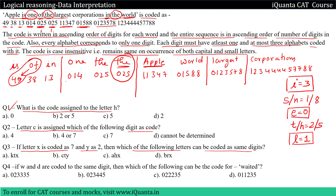Now if I compare 'the' and 'apple', between them I have only one letter common, which is E. And E we already know is zero. So when can we have zero common between 'the' and 'apple'? It is possible only when I assign 'apple' as 01588. So 'apple' will be 01588 and 'world' will be 11347.